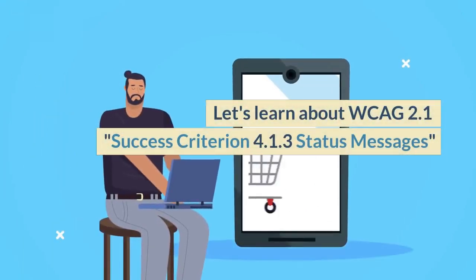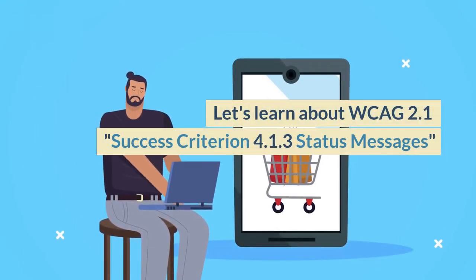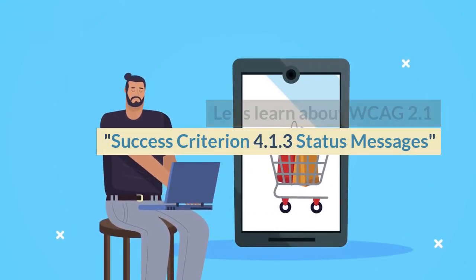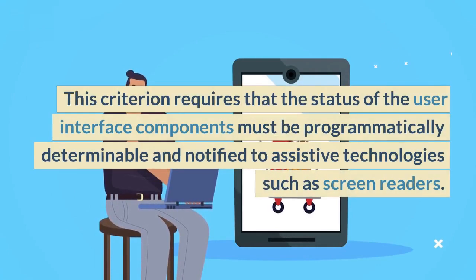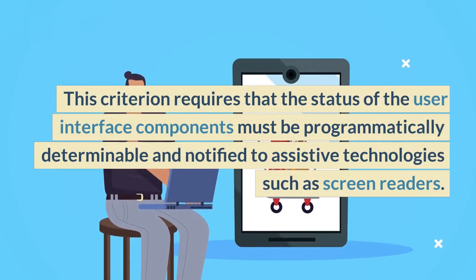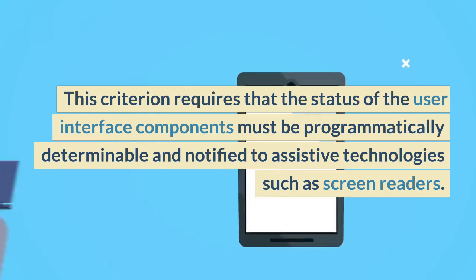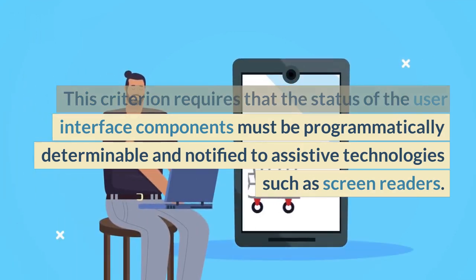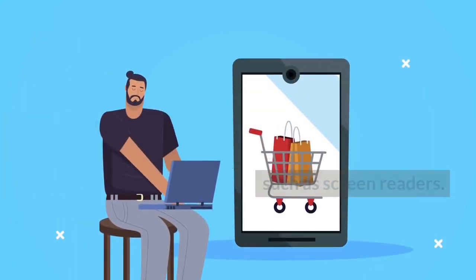Let's learn about WCAG 2.1 Success Criterion 4.1.3 Status Messages. This criterion requires that the status of user interface components must be programmatically determinable and notified to assistive technologies such as screen readers.